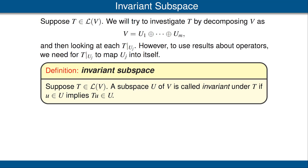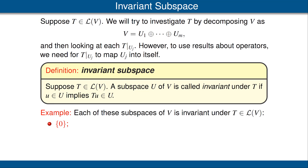Suppose T is a linear map from V to V. A subspace U of V is called invariant under T if whenever we take a vector in U and apply T to it, we end up with another vector in U. Let's look at some examples of invariant subspaces.